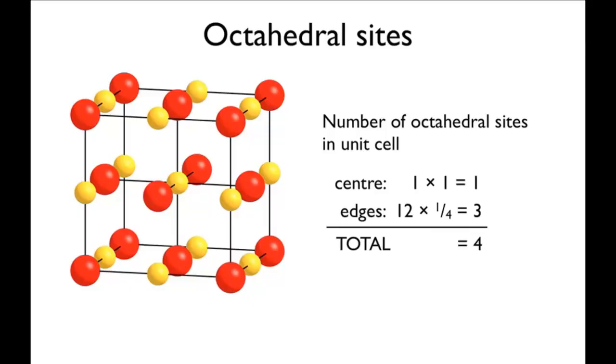This means that there are four octahedral sites per unit cell, and since there are four atoms in a unit cell, that means there's one octahedral site per atom.